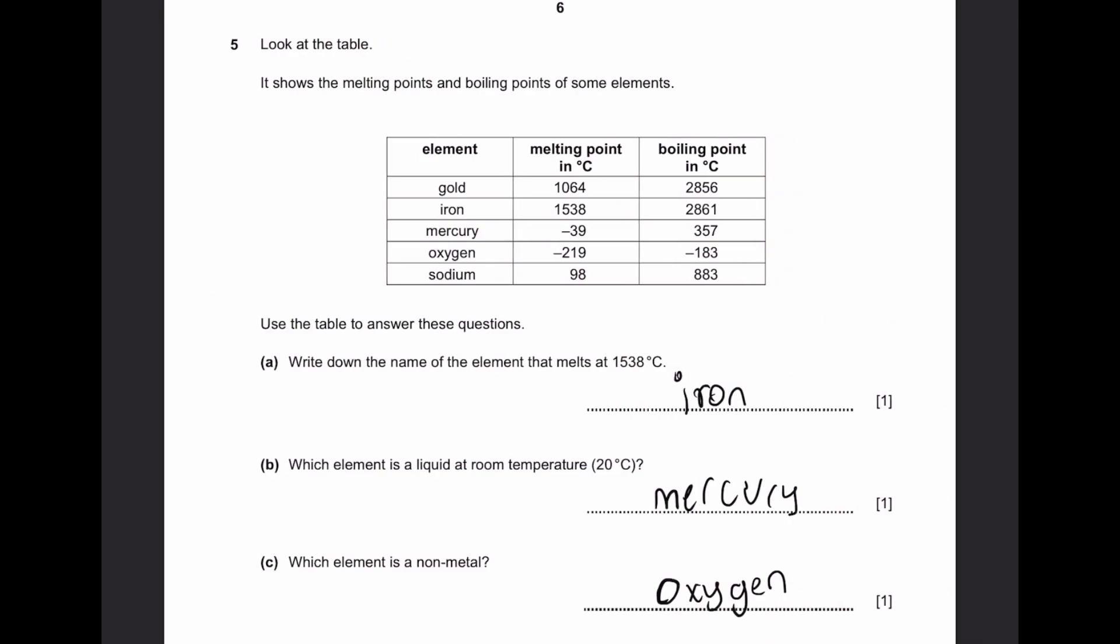Question 5. Look at the table. It shows the melting and boiling points of some elements. Part A. Write down the name of the element that melts at 1538 degrees Celsius. That is iron, because its melting point is 1538 degrees.